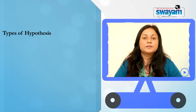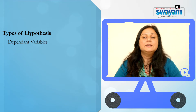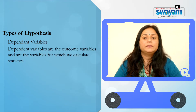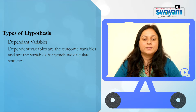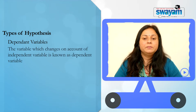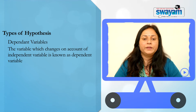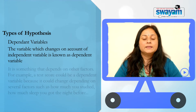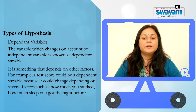Dependent variables are the outcome variables and are the variables for which we calculate statistics. The variables which change on account of independent variables are known as dependent variables. It is something that depends on other factors.